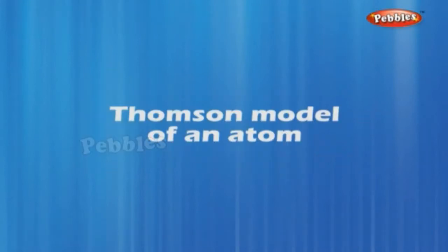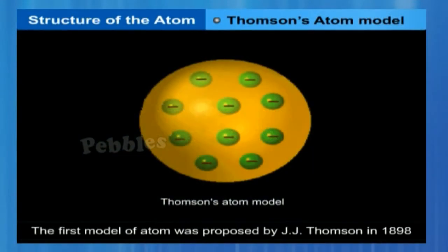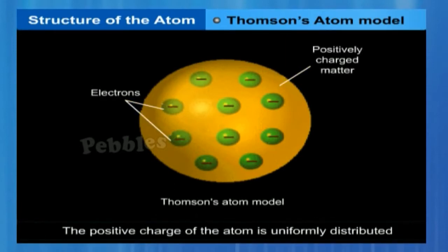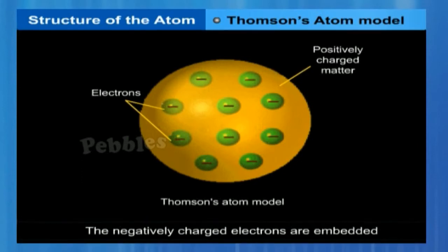Thompson's Model of an Atom. The first model of the atom was proposed by J.J. Thompson in 1898. According to this model, the positive charge of the atom is uniformly distributed throughout the volume of the atom and the negatively charged electrons are embedded in it, like seeds in a watermelon.